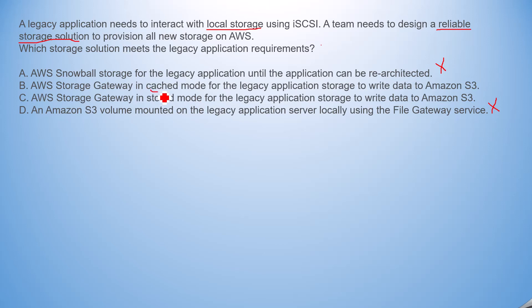Option B uses cached mode. In cached mode, it provides lower latency and the most frequently accessed data resides in local storage. When data is not available in local storage, the AWS Storage Gateway provides direct connectivity to bring the data to local storage. This helps iSCSI avoid managing large amounts of data and increases performance.